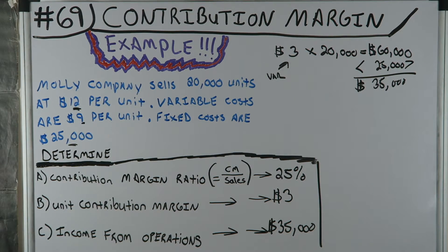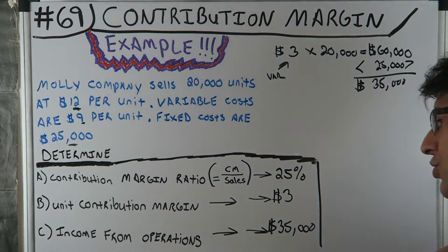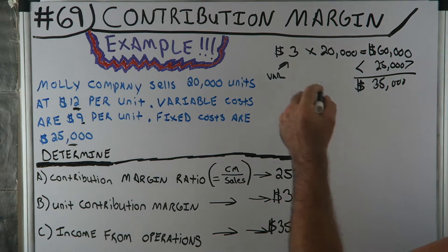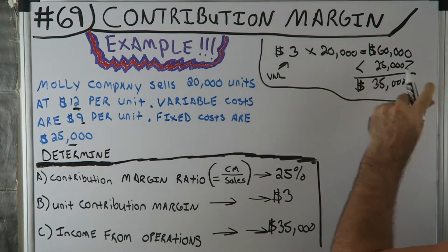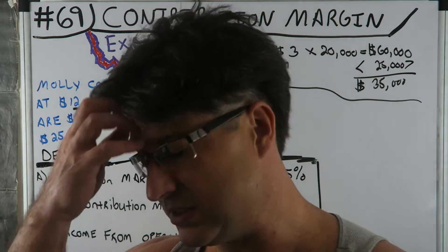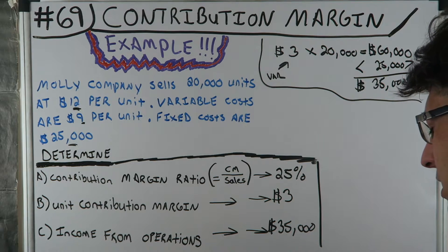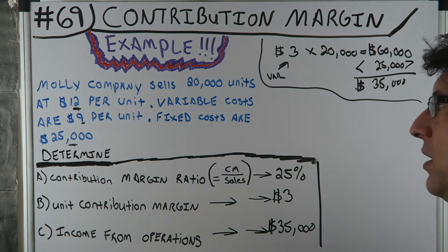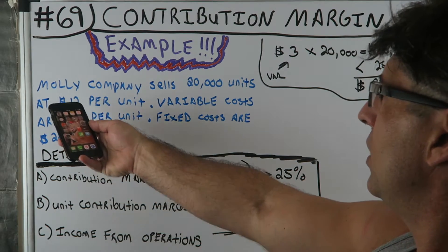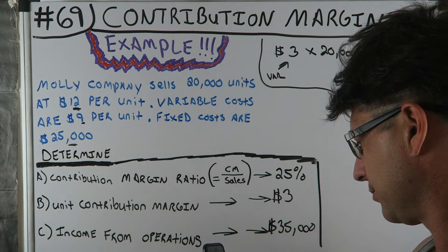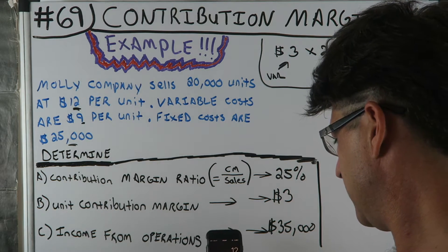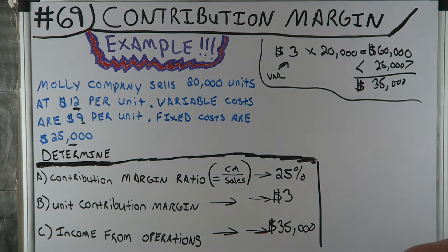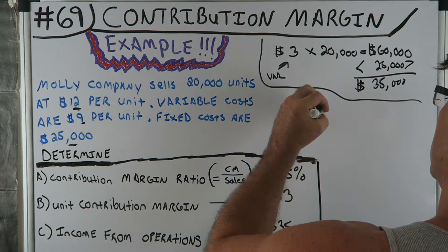A longer way to do this, if you're not following how I got to $35,000: let's get all the income coming in. What's all the money coming in? $12 times 20,000 units.